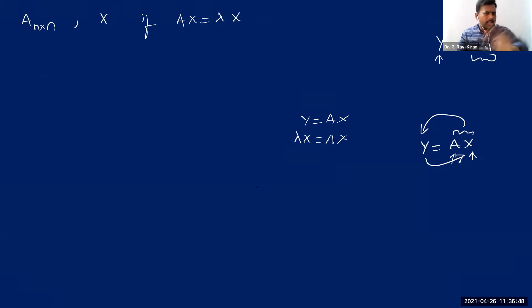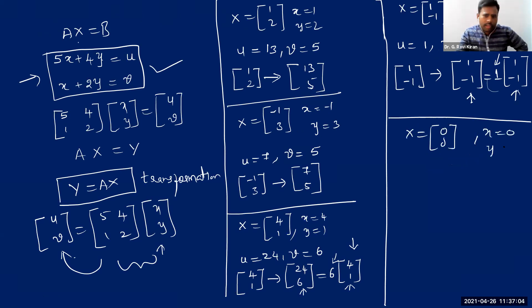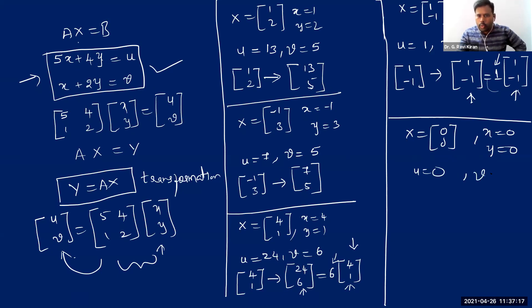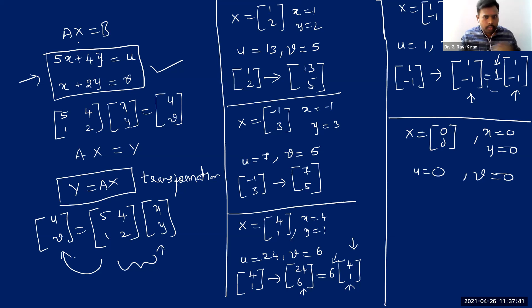What if capital X equals (0, 0)? When x and y are both zero, u and v are also zero — you get the zero vector. A zero vector has no direction, so we cannot say the resulting vector and the original vector are in the same direction. Therefore, we cannot consider it as an eigenvector. That's why while defining eigenvector of a matrix, we take x to be a non-zero vector.